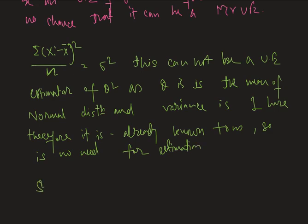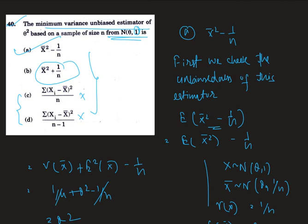Option D, which is 1/(n-1) times the sum of (xi minus x-bar) squared, is an unbiased estimator of the population variance. Therefore, it also cannot estimate theta squared in this case. So it is pretty much obvious that option A is the correct one. That's all for today, thank you very much.